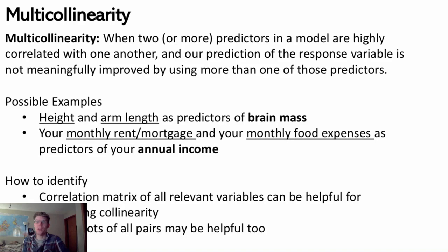Another example might be monthly rent or mortgage payment and monthly food expenses — those are probably fairly correlated variables. If I'm trying to predict someone's annual income, it may not be necessary to have both. But it just depends; we'd have to look at the data to know for sure.